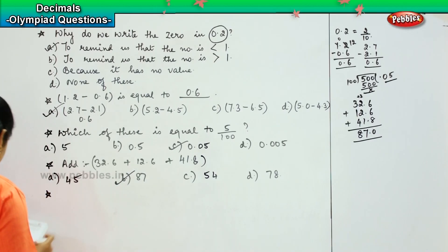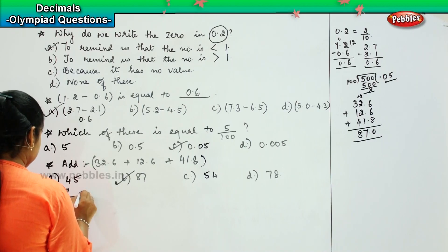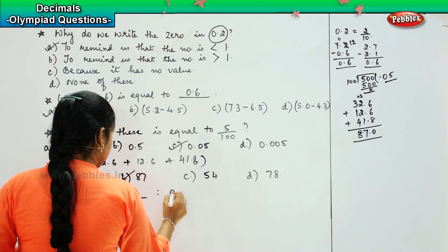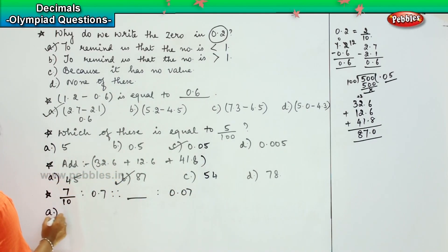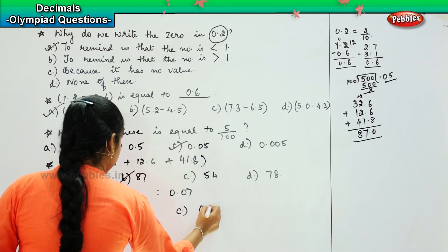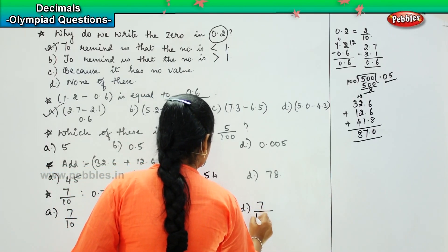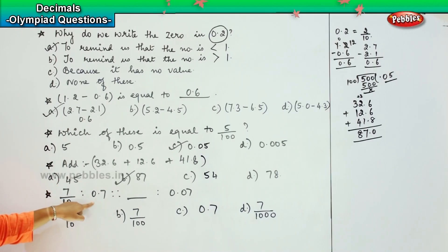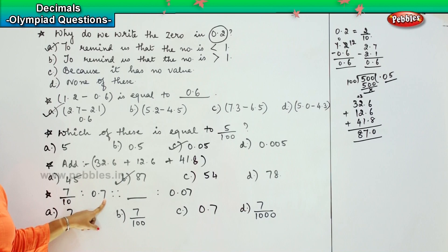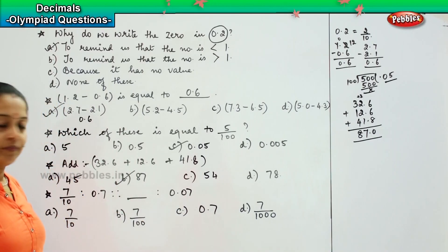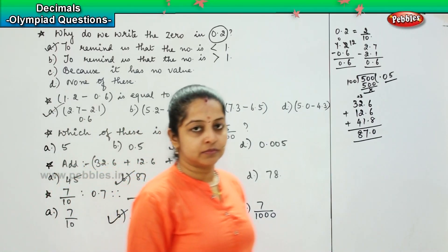The next question is: 7 by 10 is to 0.7, then dash is to 0.07. The options are: A) 7 by 10, B) 7 by 100, C) 0.7, D) 7 by 1000. If 7 by 10 can be written as 0.7, what will be written as 0.07? We learnt that if there is one digit after the decimal it is divisible by 10, and if there are two digits after the decimal it is divisible by 100. So the answer is 7 by 100, option B.